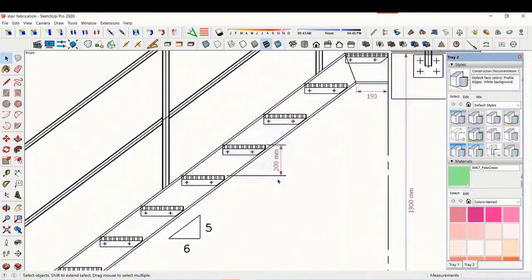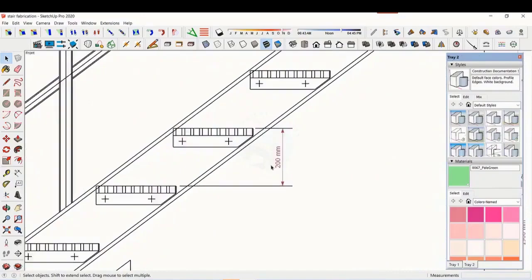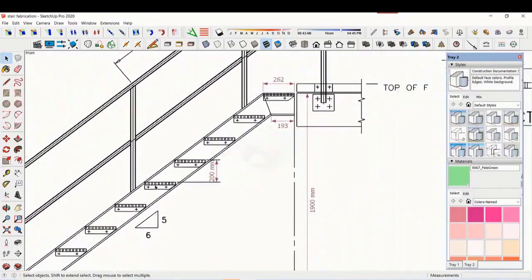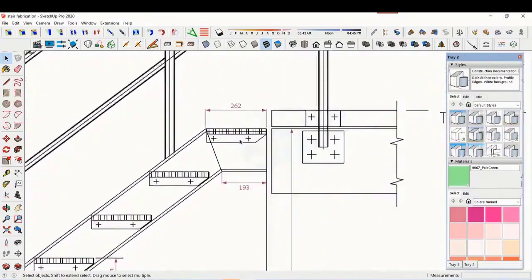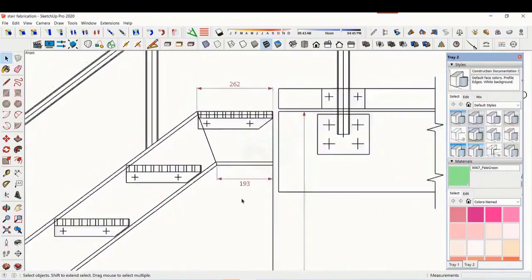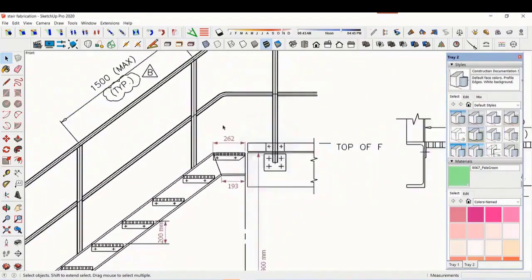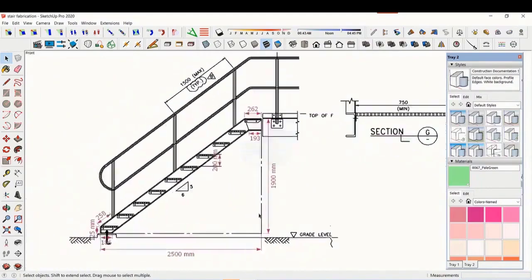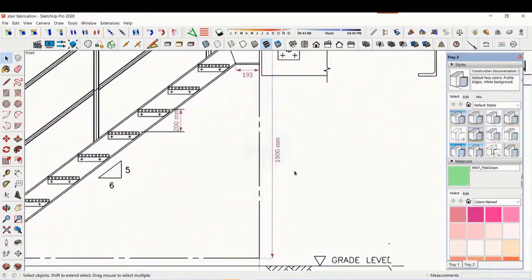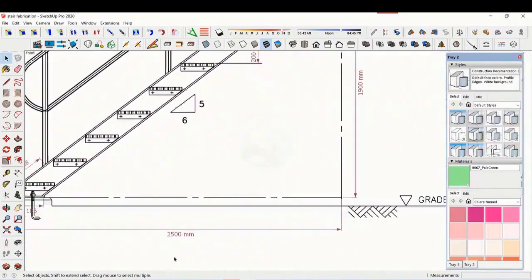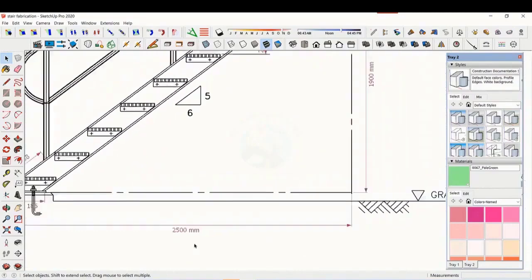The basic structure is made from ISMC 200. The height of the staircase is 1900 millimeters and the length is 2500 millimeters. The width of the staircase is 750 millimeters.